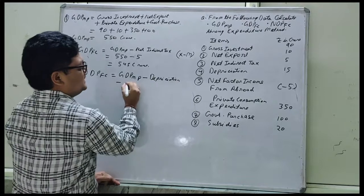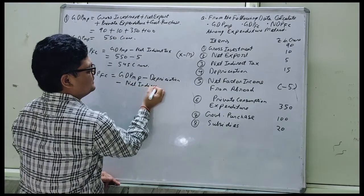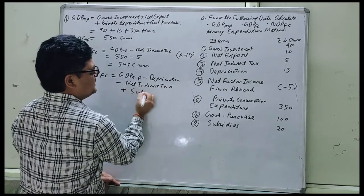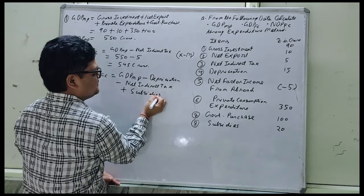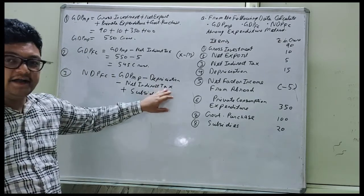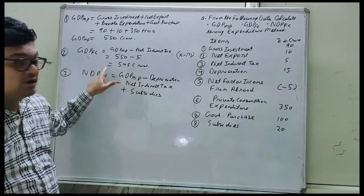Plus subsidy. So net indirect tax and subsidy, net indirect tax minus, subsidy plus, I am going from MP to FC.